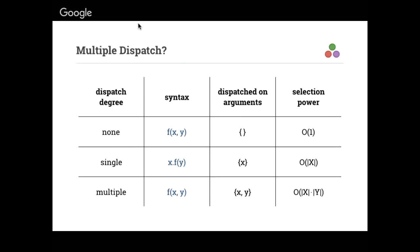You can see why people were excited about this: they went from zero selection to some selection. The notation — bars around capital X — means the size of the type of X, i.e., how many concrete types exist that X could possibly take. That's actually what we're basing the selection on. So if X is some abstract type, how many concrete types could X possibly take? That's the selection power.